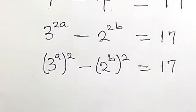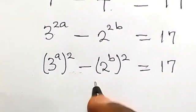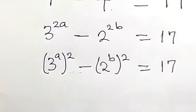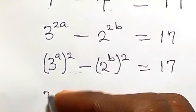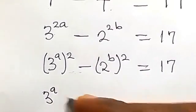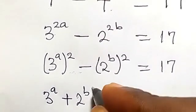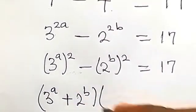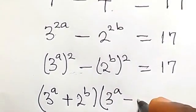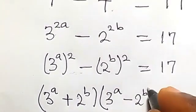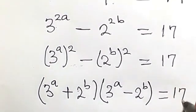We can rewrite this again because what we have is a difference of two squares. From factorization of difference of two squares, this gives us 3 raised to power a plus 2 raised to power b, times 3 raised to power a minus 2 raised to power b, equals to 17.